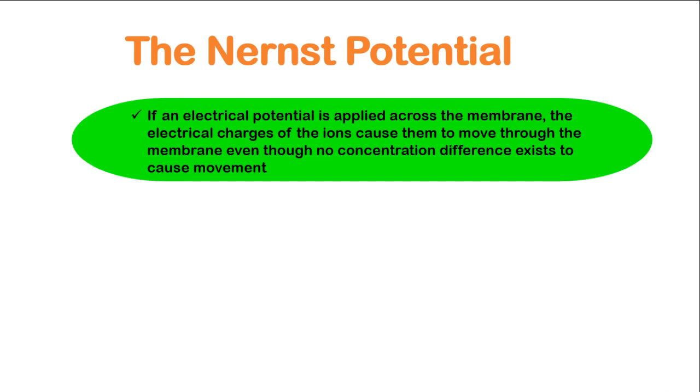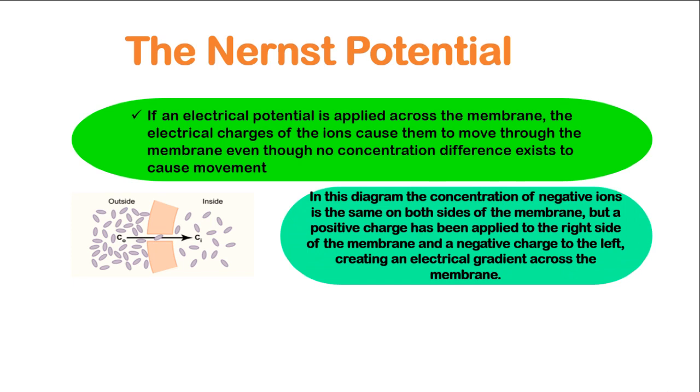The Nernst Potential. If an electrical potential is applied across the membrane, the electrical charges of the ions cause them to move through the membrane even though no concentration difference exists to cause this movement.